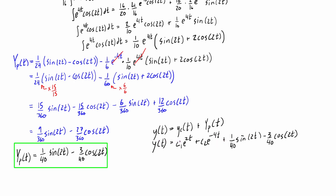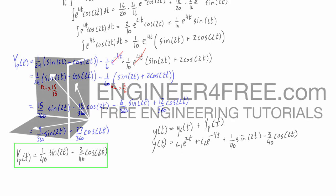Thanks for watching. Hopefully you can see now why using the undetermined coefficients method is a lot easier when we have a sine or cosine function on the right-hand side than using variation of parameters.